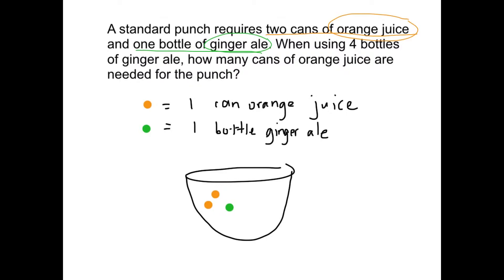Let's think about this for a second. If I were to add another two cans of orange juice, how many bottles of ginger ale should I add? We would add another one, because for every two cans of orange juice there's only one bottle of ginger ale. How many cans of orange juice do I have in my punch right now? Four. And how many bottles of ginger ale do I have? Two. Let's represent that with numbers: two cans of orange juice for every one bottle of ginger ale, and if I have four cans of orange juice, I have two bottles of ginger ale.